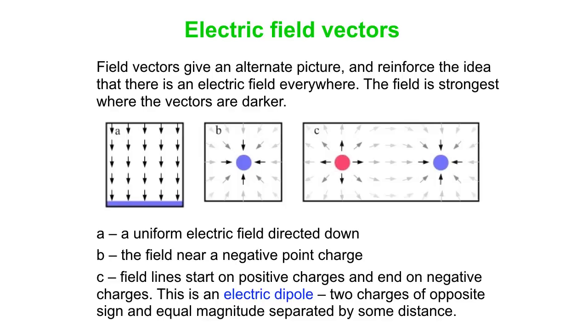Again, A is a uniform electric field directed down. B is the field near a negative point charge—the arrows fade away with distance from the charge. C is the electric dipole, where the field starts on the positive charge and ends on the negative charge.